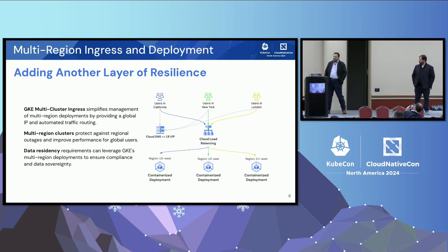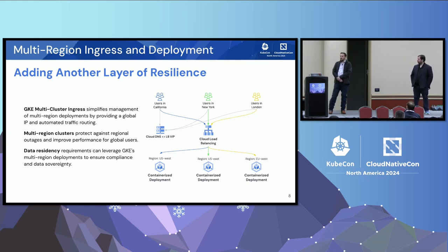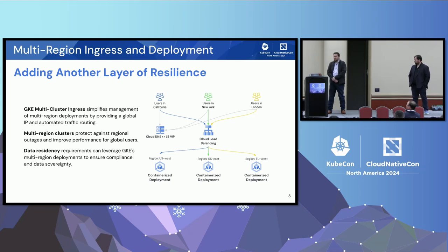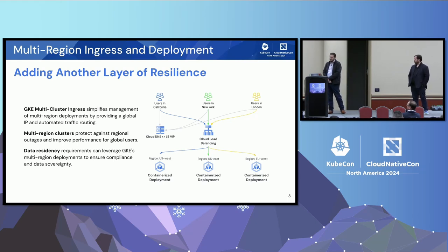From a multi-regional ingress and deployment perspective, GKE Multi-cluster Ingress simplifies management of multiple regions. With multi-cluster ingress, you get a global anycast IP address that gives us a way to automatically route traffic to any of these regions through one entry point. Our legacy system uses regional IPs for each one managed through DNS, so having one IP address is a new concept, but it allows us to control where traffic goes and leverage what Google is very good at — distributing global traffic. Our multi-regional clusters protect against regional outages and improve performance for global users, with traffic sent over Google's backbone. Our data residency requirements are also addressed through GKE multi-regional deployments to ensure compliance and data sovereignty.